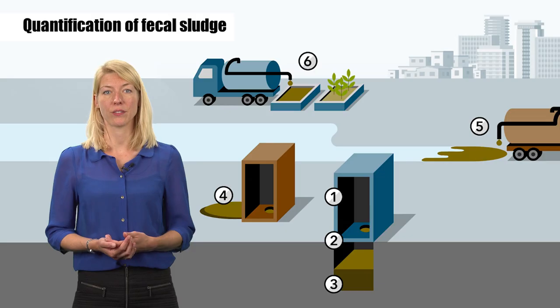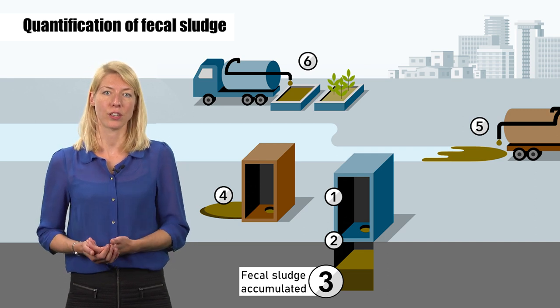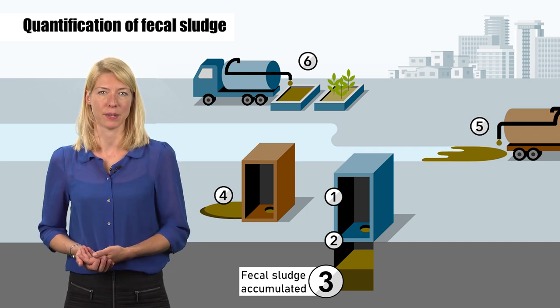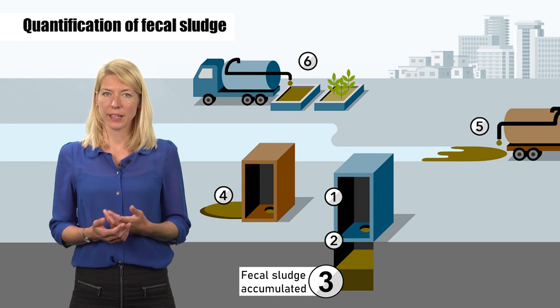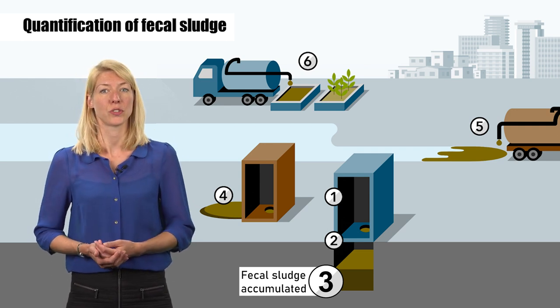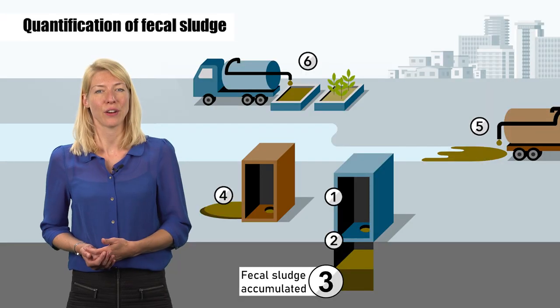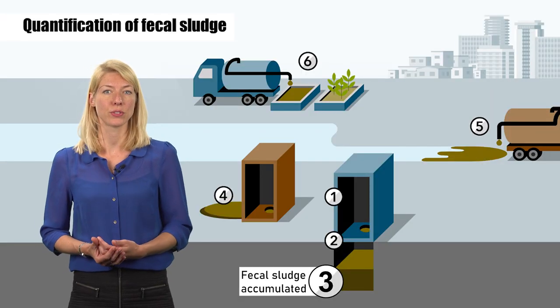This is a much higher volume than number three, which is what is actually accumulating inside the containment. Accumulated fecal sludge takes into account varying levels of biological degradation, as well as any infiltration or leaching. But it is difficult to calculate, as these rates are mostly unknown.